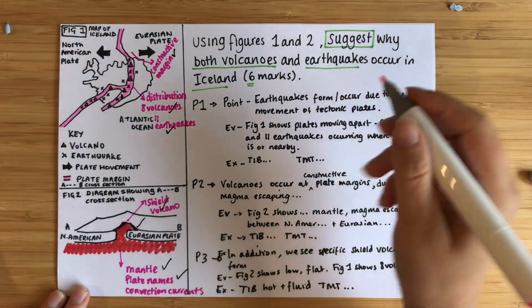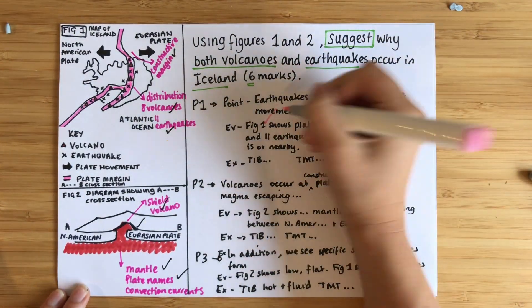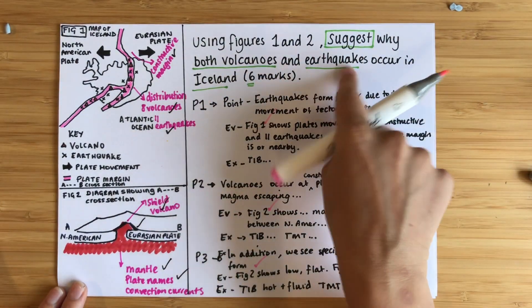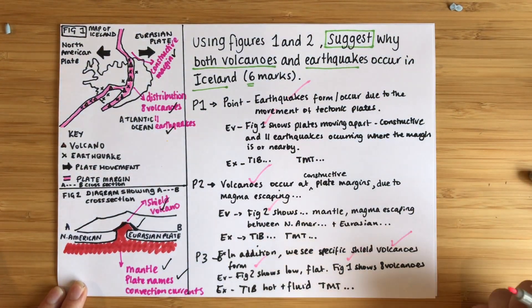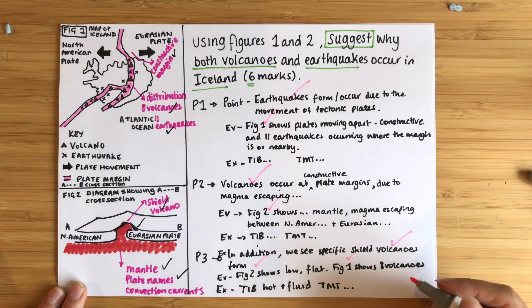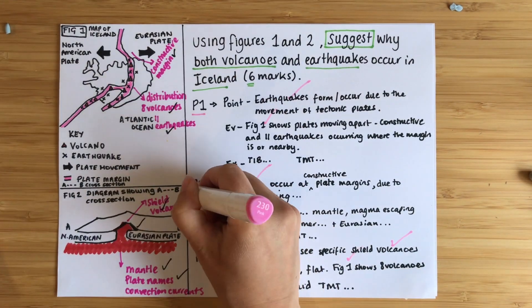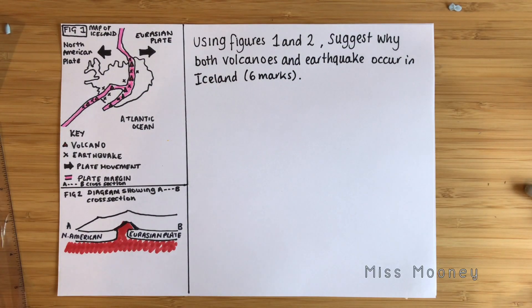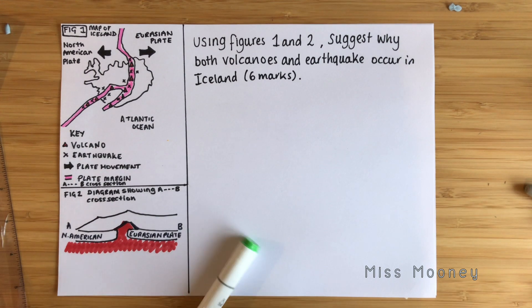So this is an overview of how you could have structured your six mark question. Once you've finished, go through and check that you've done everything. Have you talked about figures one and two? Yes. Have you included volcanoes and earthquakes? Go through and check you've got those two words. It's always good to scan through to make sure you've done everything the question asked. Remember, it's your exam answer, so choose the points you feel most confident with to explain and provide evidence for — mine is just a suggestion.